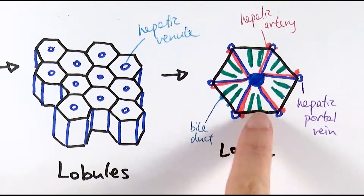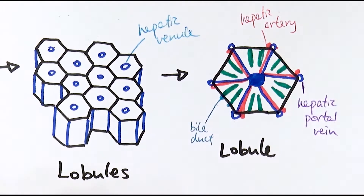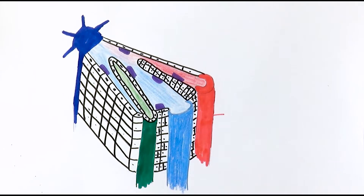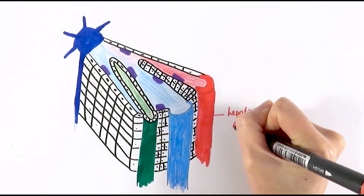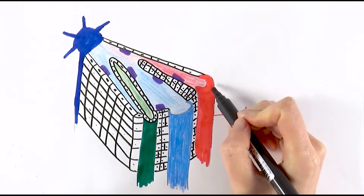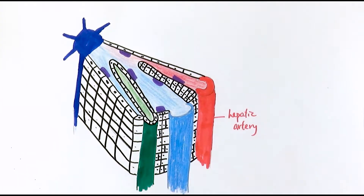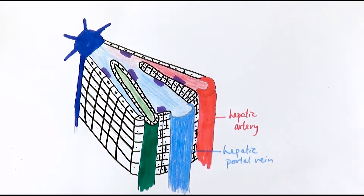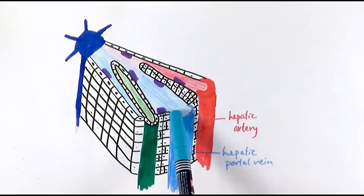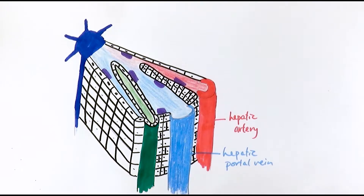Now we're going to look at one section of the lobule and magnify it a little bit. In exams, if they ask you to label it, it probably looks something like this. Here we've got the hepatic artery — one way you can tell that it is an artery is because of the thicker wall and a smaller lumen. Next to it is the hepatic portal vein, which carries deoxygenated blood from the intestines to the liver, and you can tell it's a vein because it's got a thin wall and a slightly larger lumen compared to the artery.